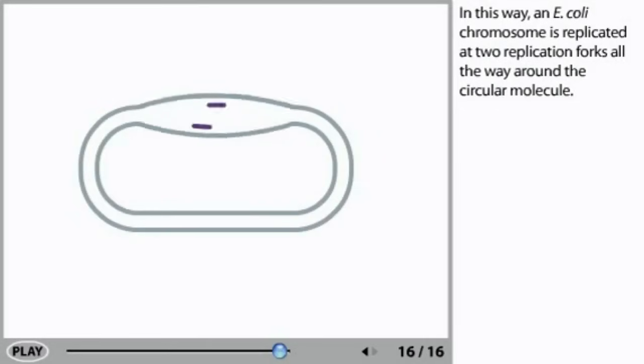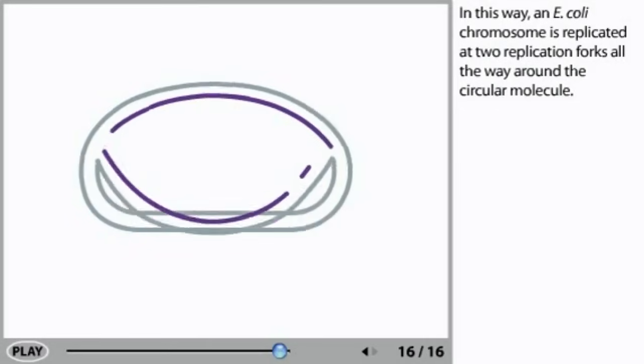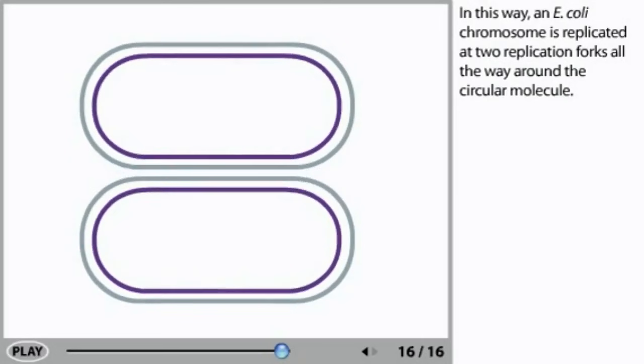In this way, an E. coli chromosome is replicated at two replication forks all the way around the circular molecule.